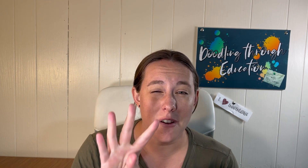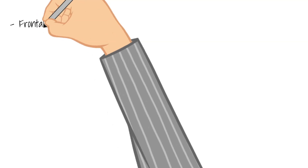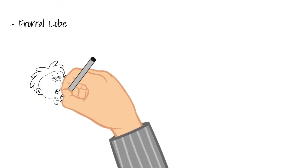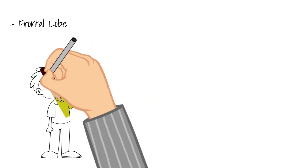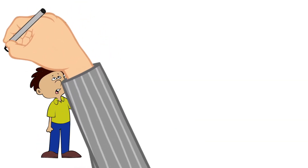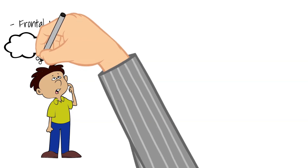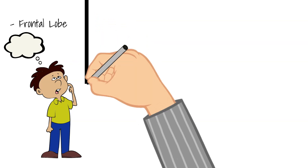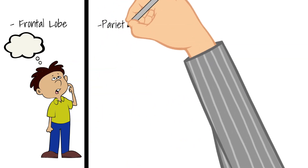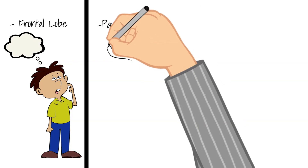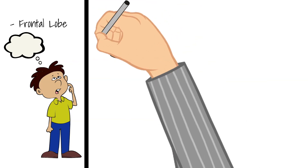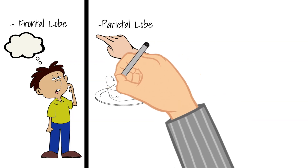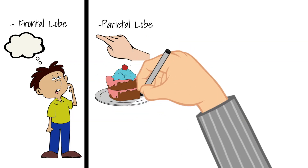Let's dive into the four lobes of our cerebrum. The first lobe is the frontal lobe. This lobe is involved in complex thinking, imagining, and making decisions. It's located right behind your forehead, right in the front — hence the name. Next is the parietal lobe, and this lobe processes information about touch, taste, and temperature.